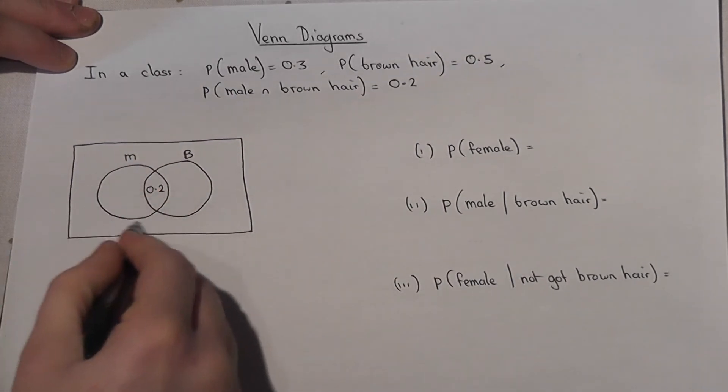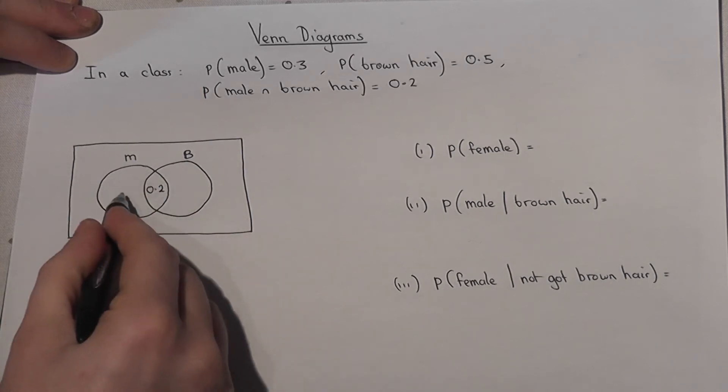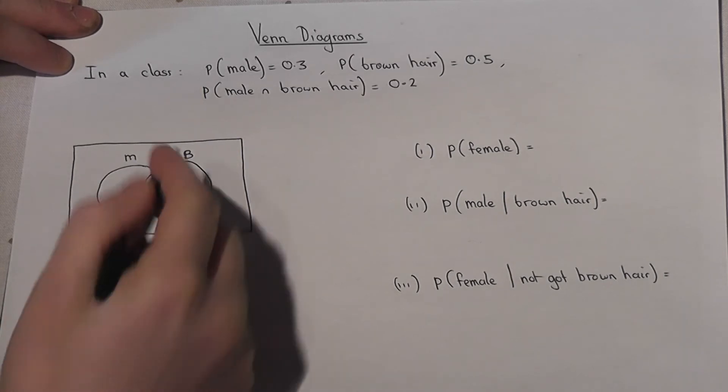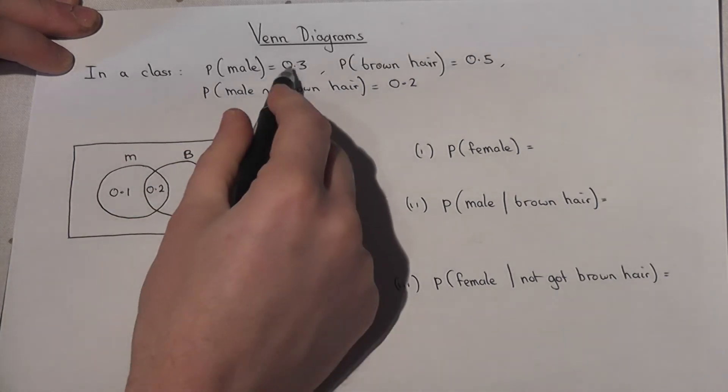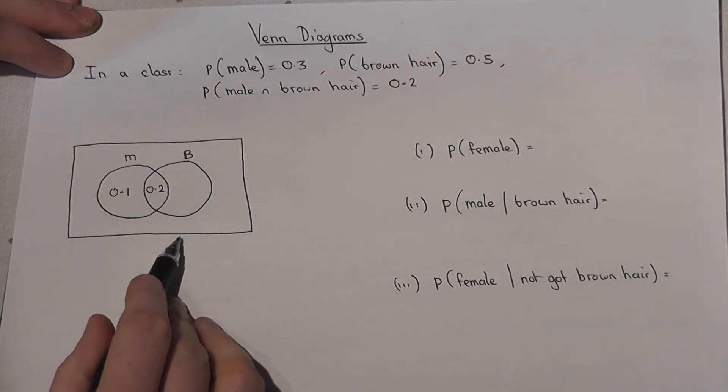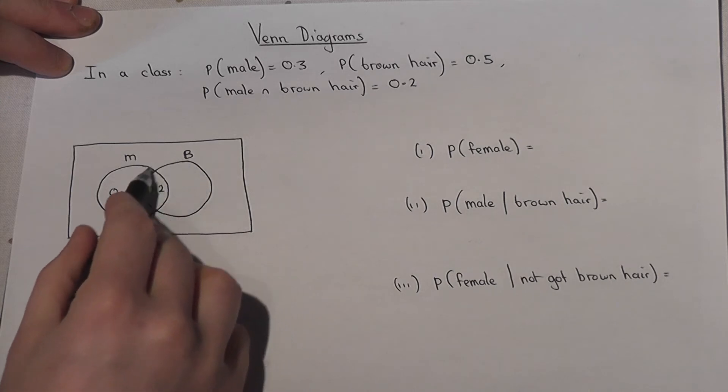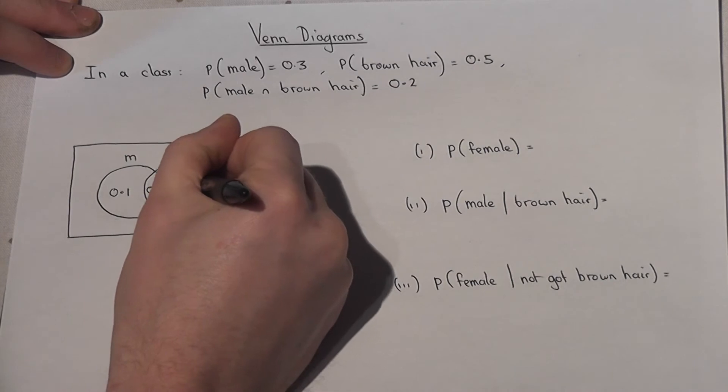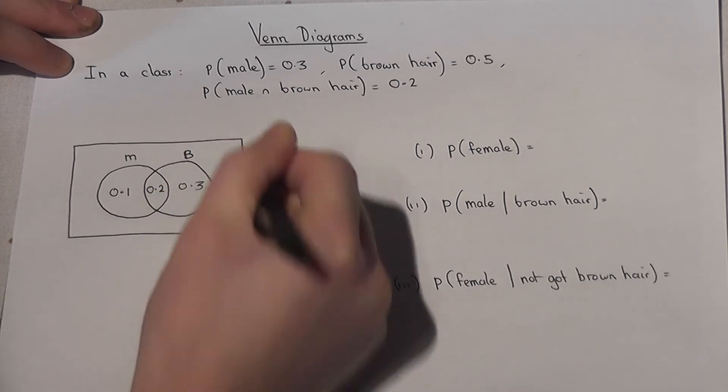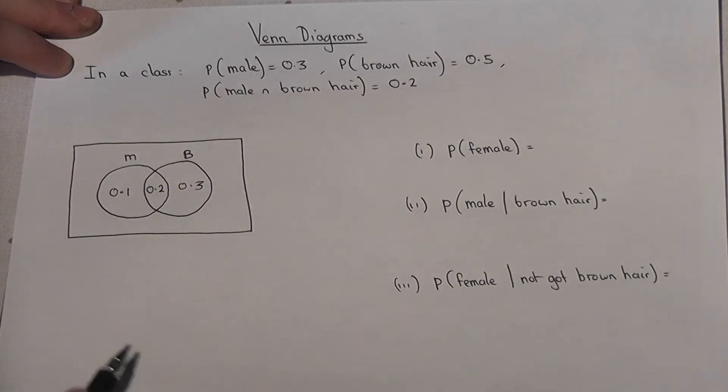Now because the entire circle is males, the bit left over here must be 0.1 to make the entire chance of being male equal to 0.3. And then because having brown hair has a chance of 0.5, then the remainder part must be 0.3, and then 0.1.